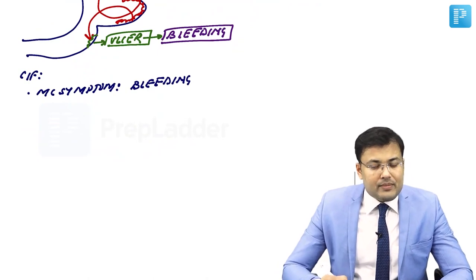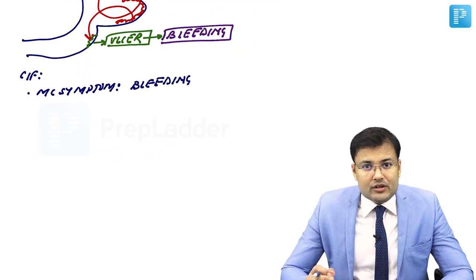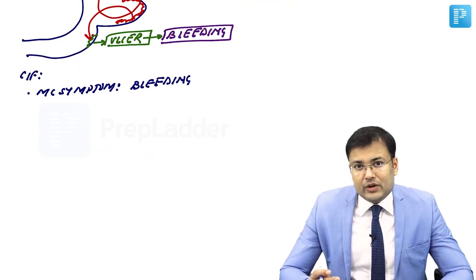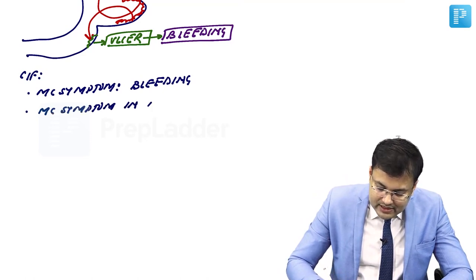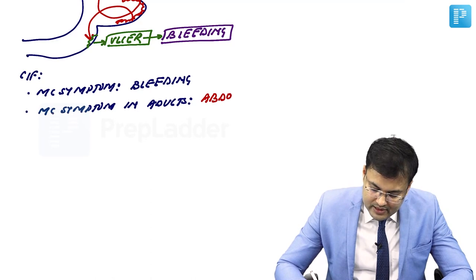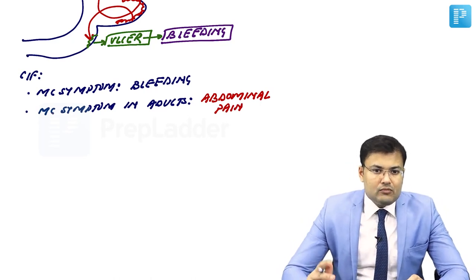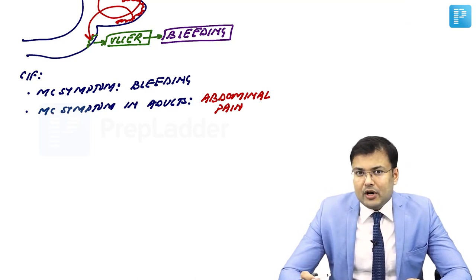If the patient is not having ectopic gastric mucosa, the question asked is: what is the most common symptom of Meckel's diverticulum in adults? The patient was not symptomatic during childhood because there was no ectopic gastric mucosa. The most common symptom of Meckel's diverticulum in adults is abdominal pain. So: most common symptom overall — bleeding; most common symptom in children — bleeding; most common symptom in adults — abdominal pain.